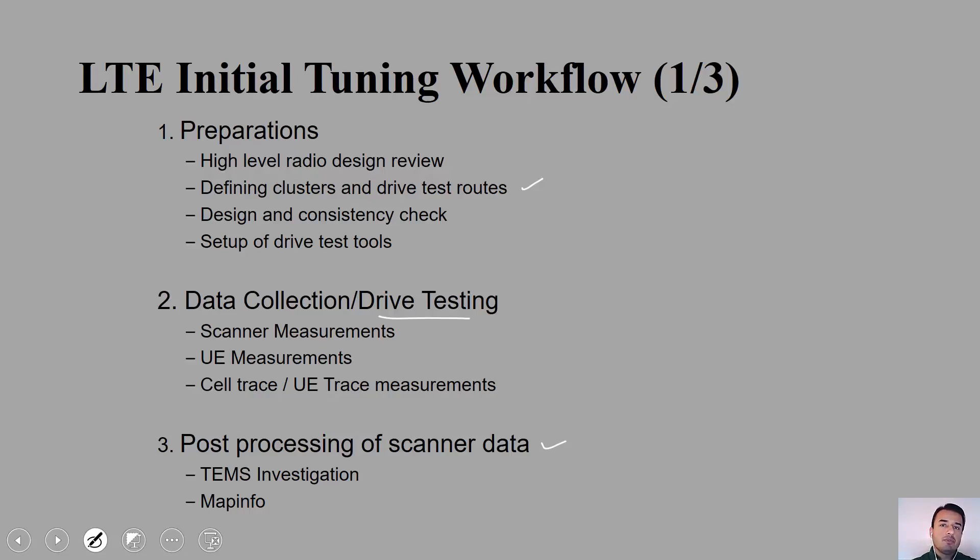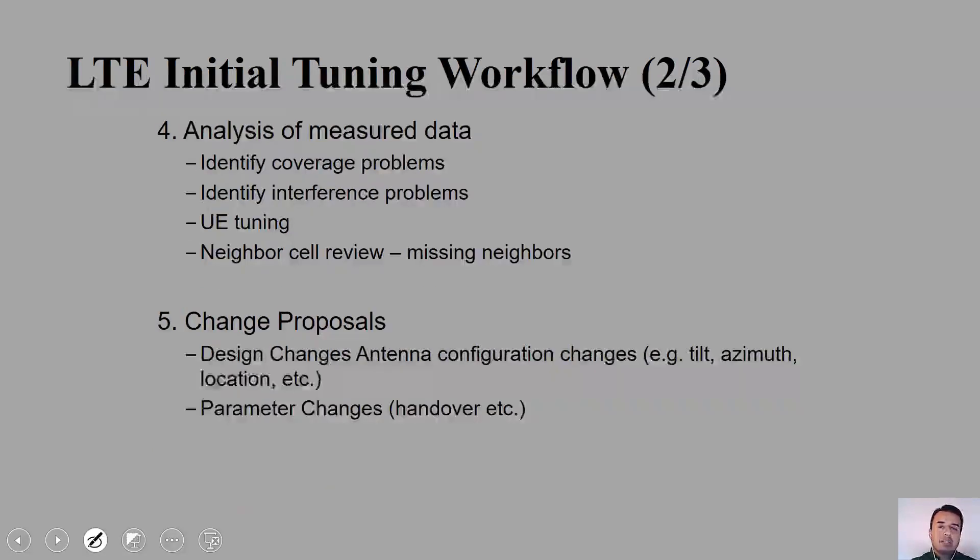After that, step number four will be about analysis of the measured data. In this case you will be able to compare your actual data which you collected with the golden cluster. A golden cluster is something which is considered to be an ideal gold standard to compare any particular cluster or site comparison or statistics with the existing cluster, which we term as golden cluster. Depending on what KPIs are being measured—that depends on the operator. What are the KPIs they want to do? Usually they can do site check down analysis, site verification analysis, handover analysis, and so on.